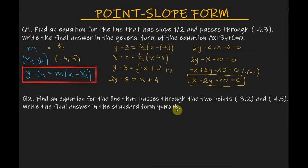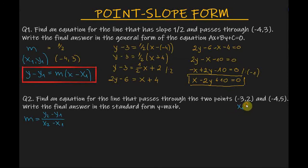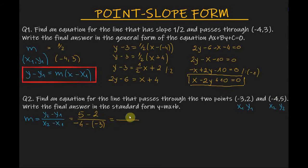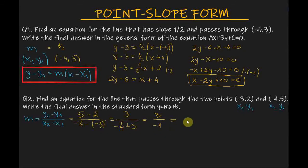For this problem, first we need to find the slope of the line using the slope formula: m equals y₂ minus y₁ over x₂ minus x₁. We are given x₁, y₁ and x₂, y₂. So m equals 5 minus 2 over minus 4 minus minus 3, which is 3 over minus 4 plus 3, which equals 3 over minus 1. The slope equals minus 3.